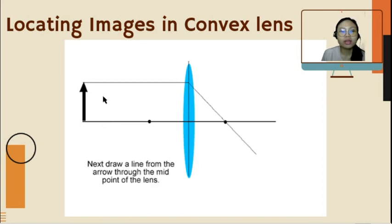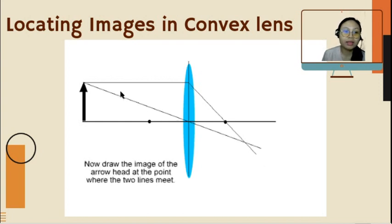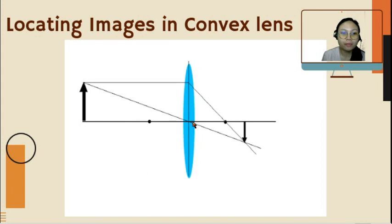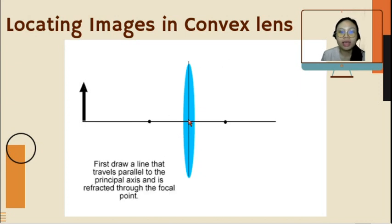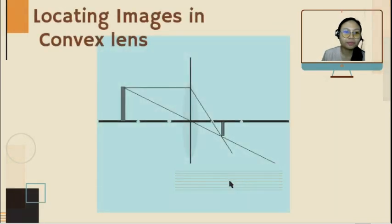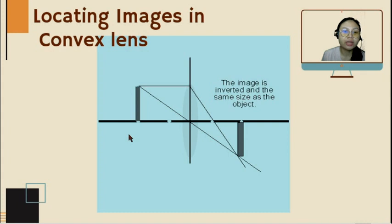First, draw a line that travels parallel to the principal axis, then it passes through F — the focal point or principal focus. Then the second ray passes through V — the vertex. This is what the ray diagram looks like at different object locations in front of a convex lens.